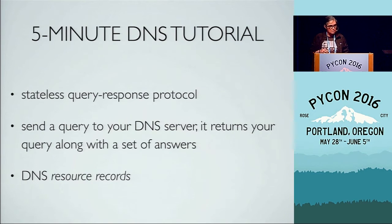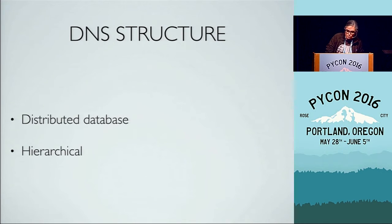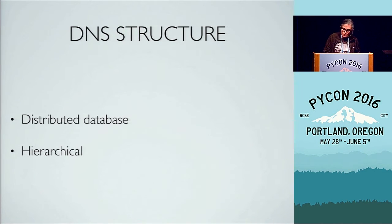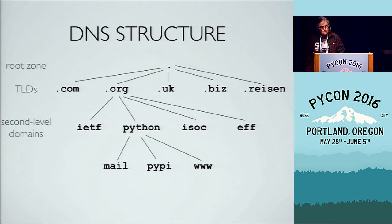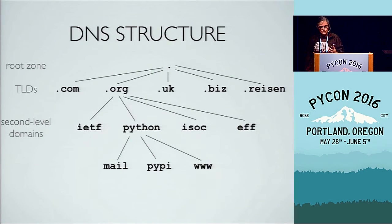DNS is basically a stateless query-response protocol. You send out a message, a response comes back, and it has enough information for you to put it together with your query. What are sent and returned are called resource records. The structure is basically an enormous distributed database. It is hierarchical — the hierarchy starts at dot, which is the root zone. Then you've got the top-level domains: .com, .org, .uk, and hundreds of others. Second-level domains include things like IETF.org, Python.org, ISOC.org, EFF.org, and then subdomains like mail, PyPy, www, and so on.